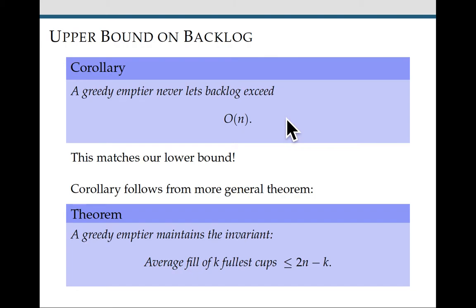So that means that the filler can't do any better than order n. And we have tightly analyzed the variable processor cup game for an adaptive filler.